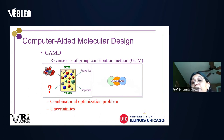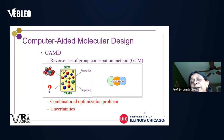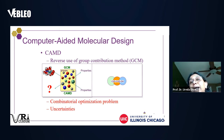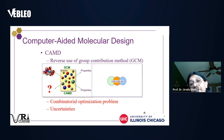This becomes a difficult combinatorial optimization problem because it involves integer decisions — what molecules to choose. Additionally, group contribution methods are not completely accurate, so the problem also involves uncertainties.